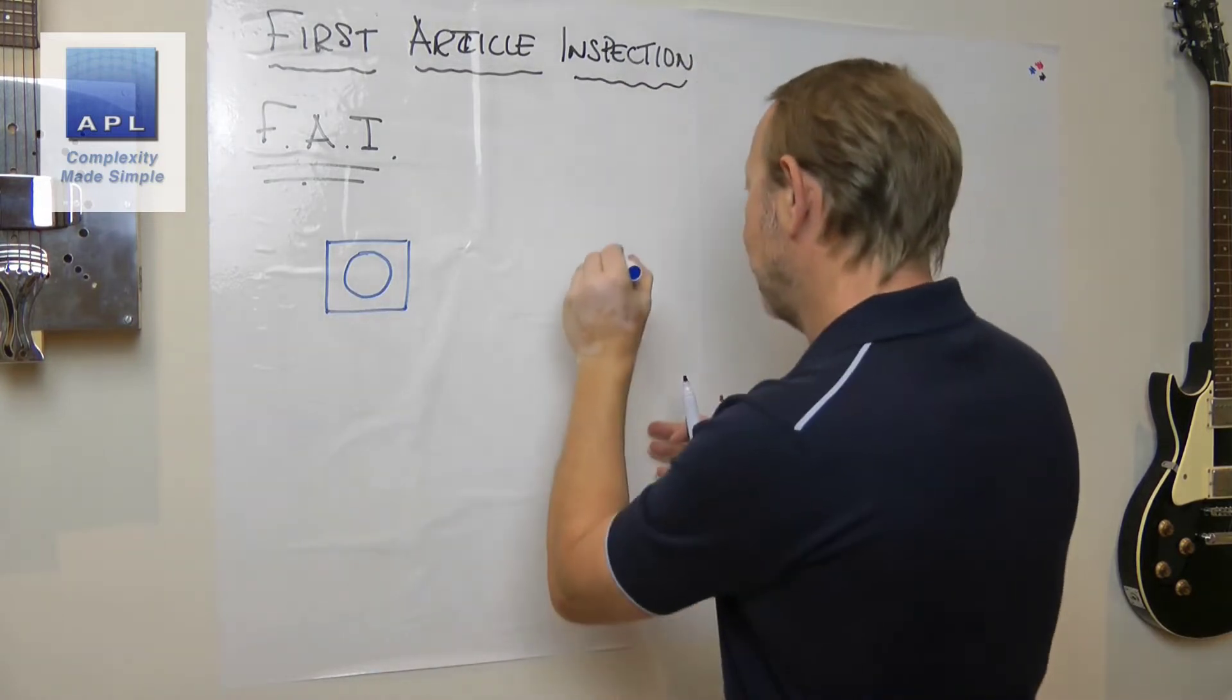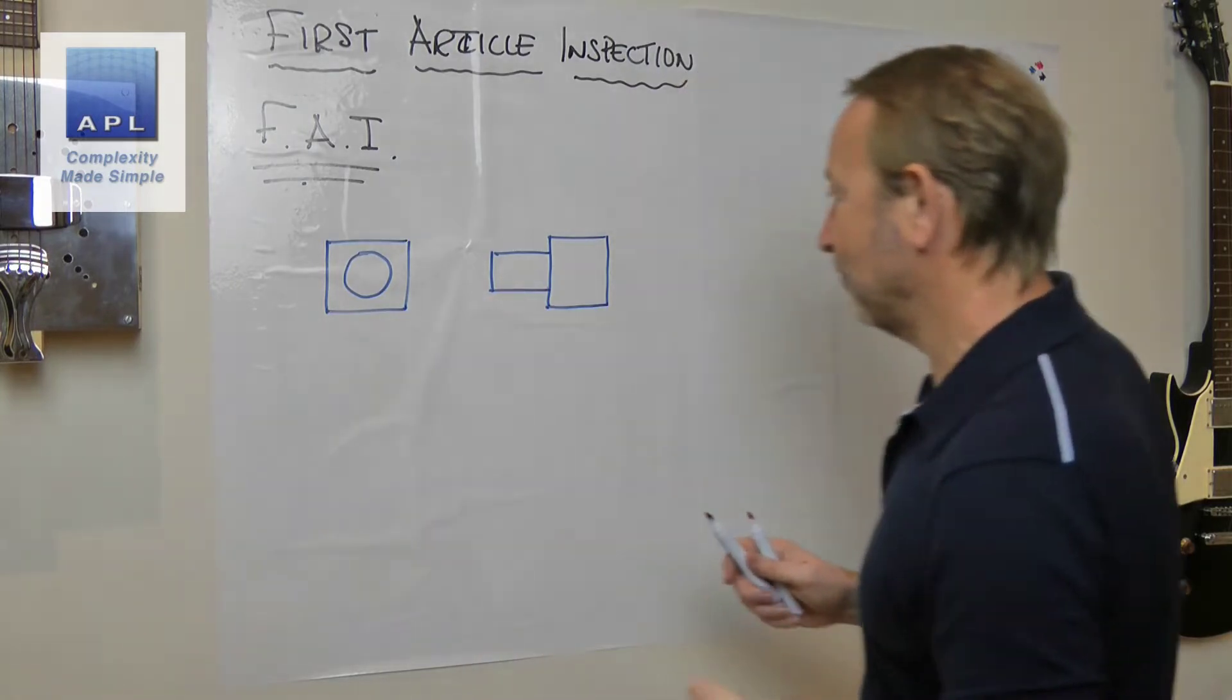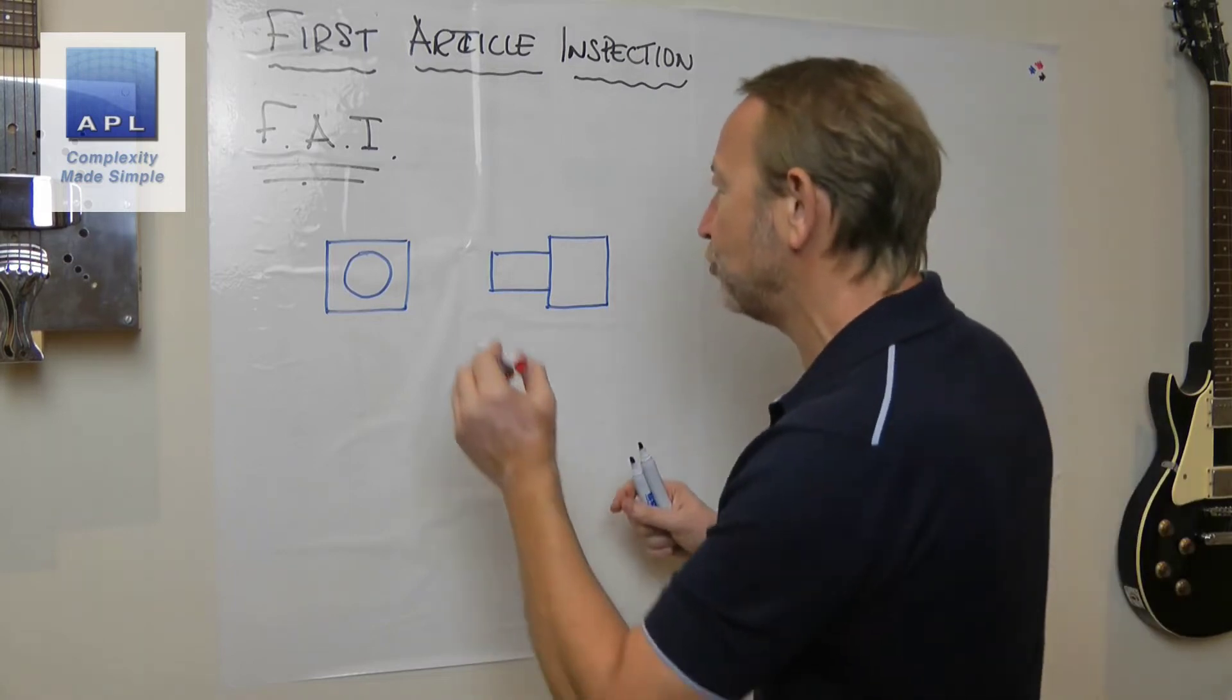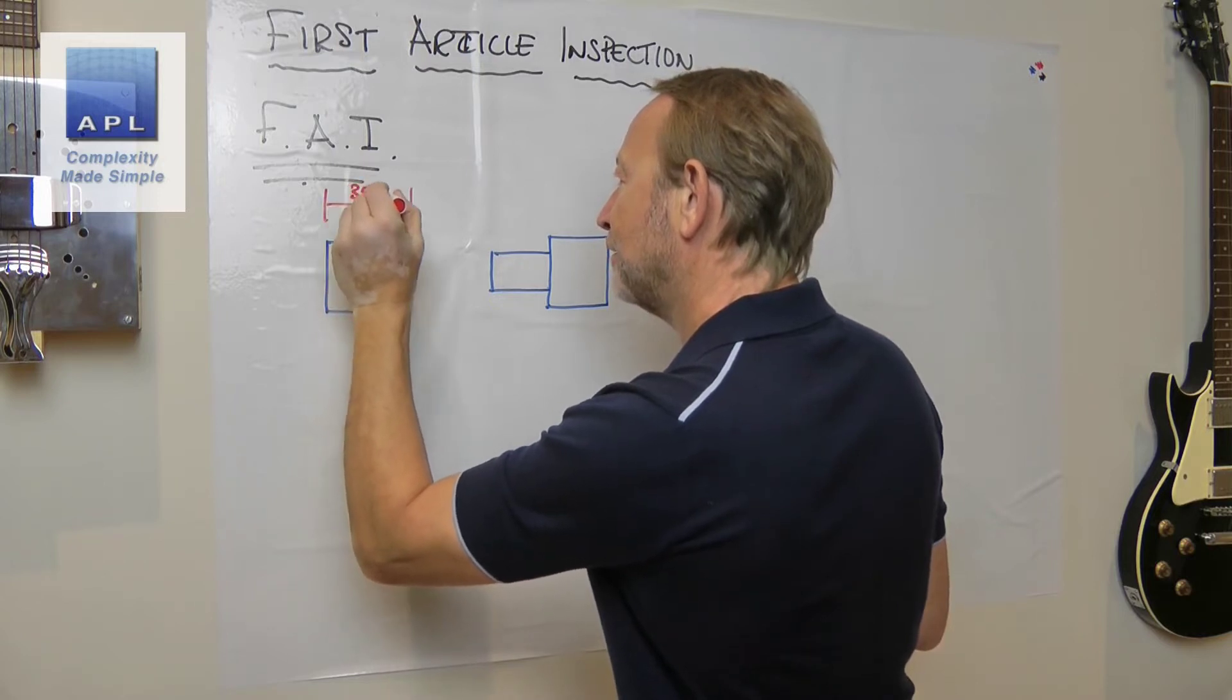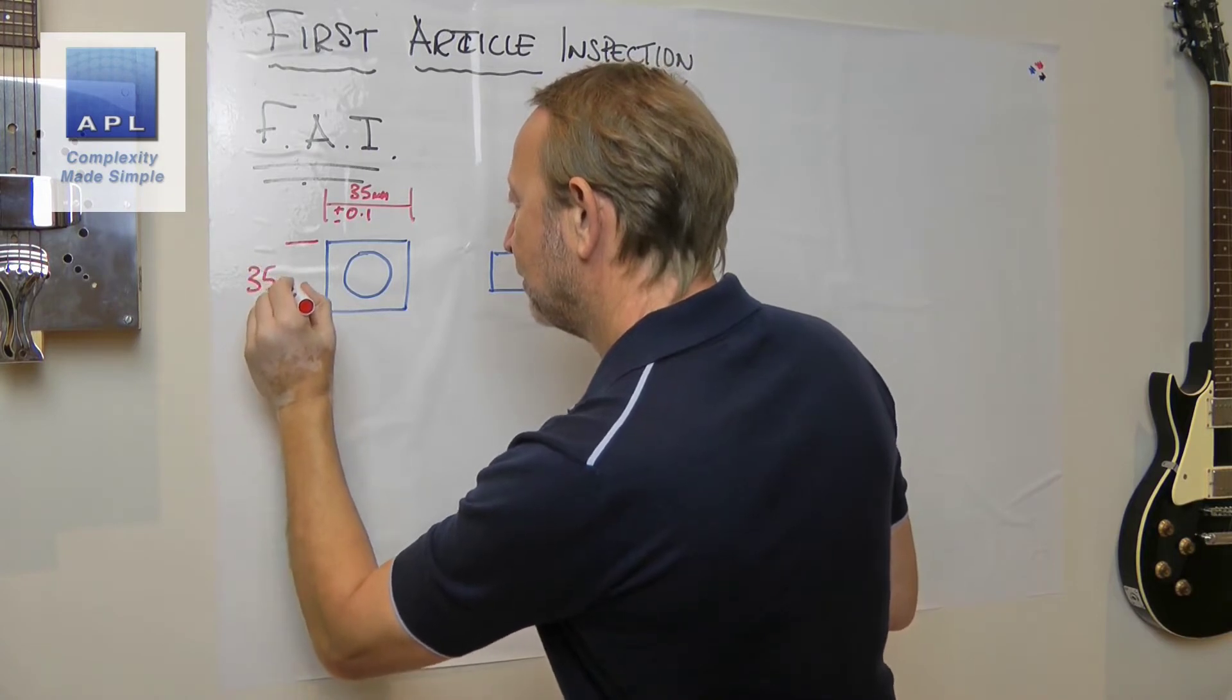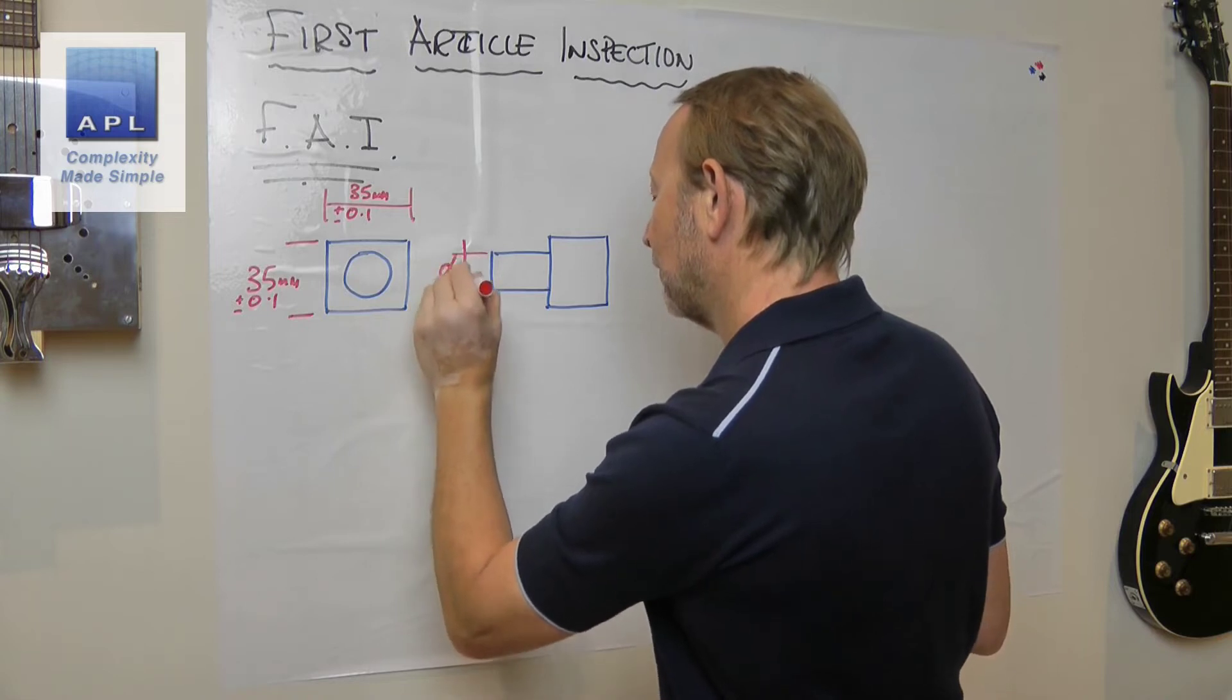If I draw it the other way, here we've got the square block there, and there's the diameter sticking out there. I think that's third angle, it's been a long time since I did any technical drawing. Let's put some dimensions on this. We'll say that this thing has got to be 35 millimeters plus or minus 0.1, same here, 35 millimeters plus or minus 0.1. The diameter here is 18 millimeters.